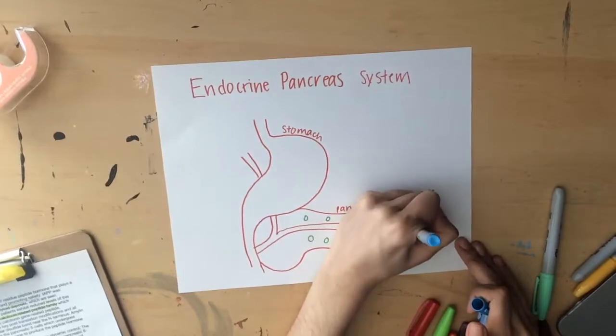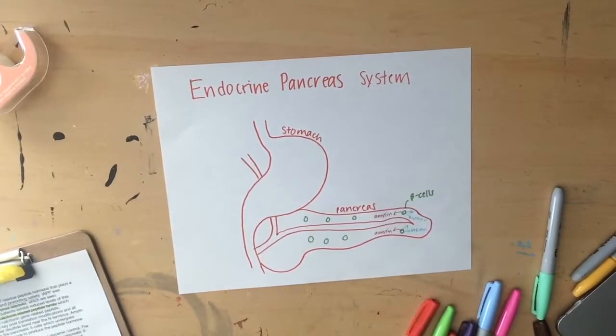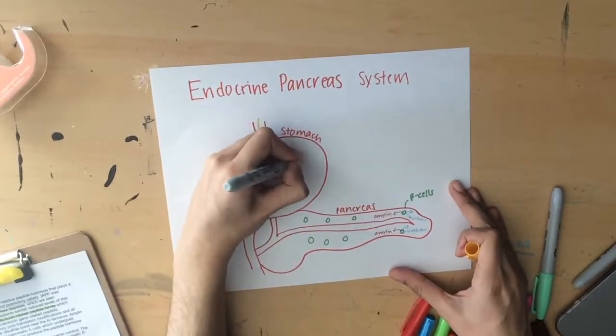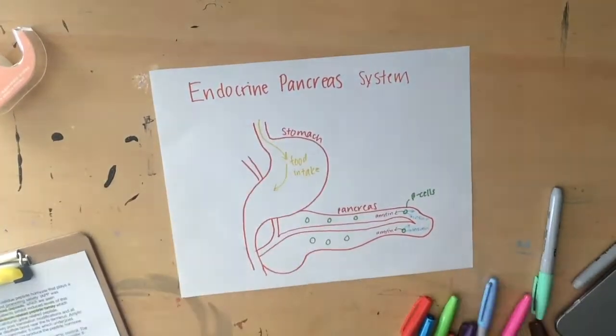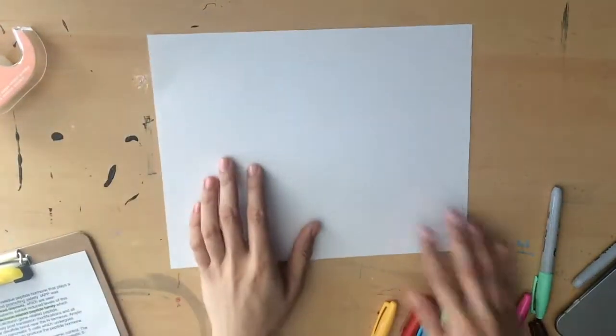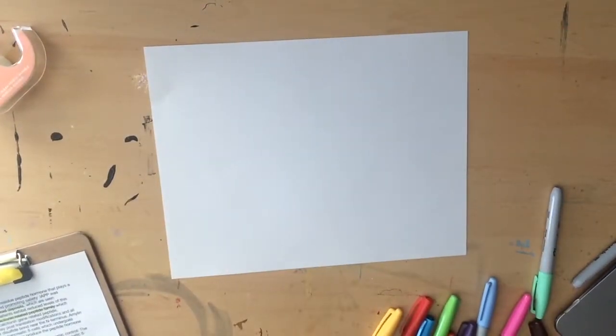and is cleared by peptidases in the kidney. IAPP is released following food intake to regulate blood glucose levels and acts as a satiation signal.